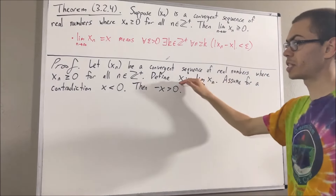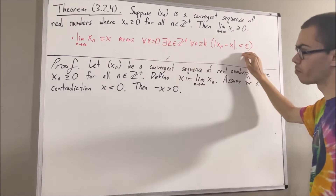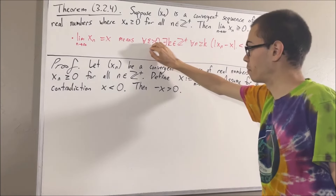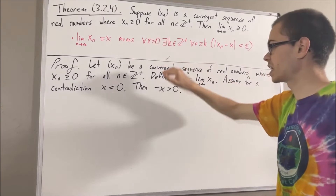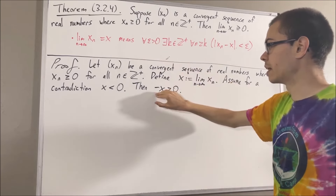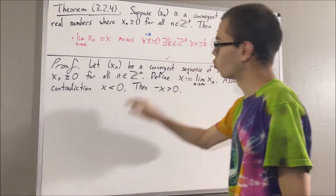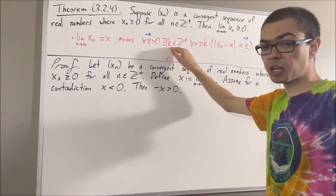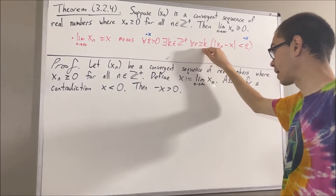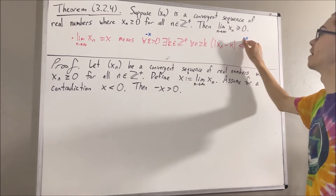Now, since xn converges to x, this means we are given that the definition statement is true. And this statement works for every positive real number, so it must work for the positive real number negative x. So, taking epsilon to be the negative of x, we have that there is some positive integer k such that for all positive integers n greater than or equal to k, the absolute value of xn minus x is less than the negative of x.